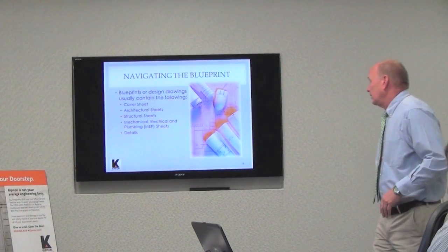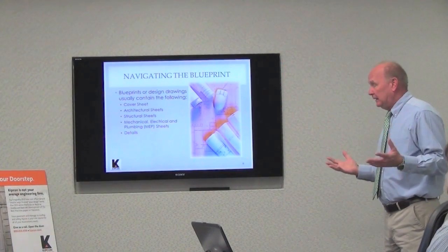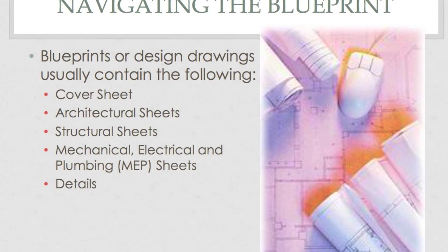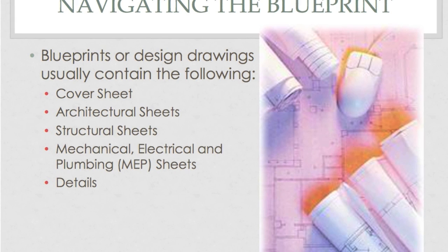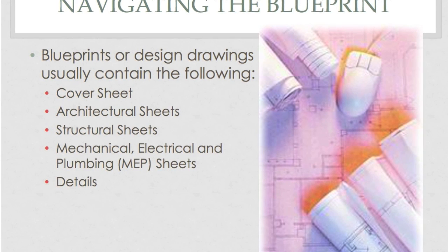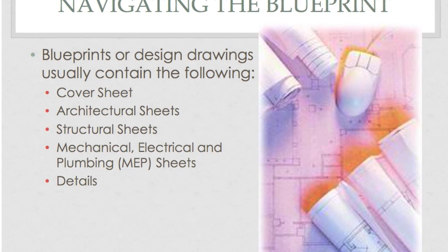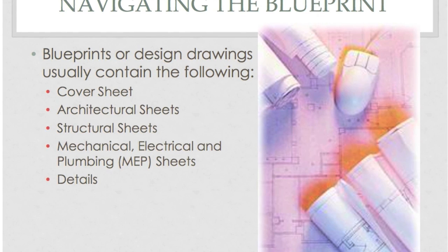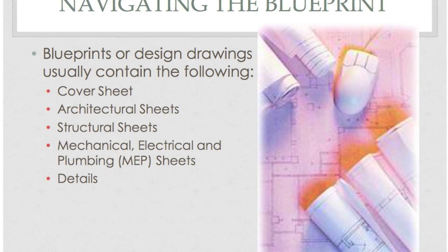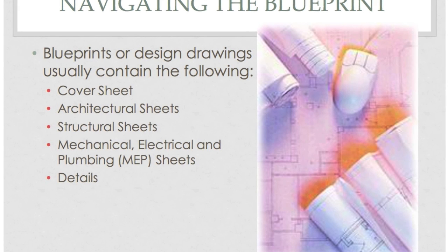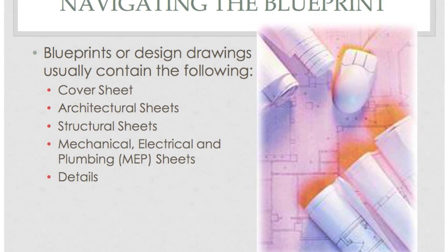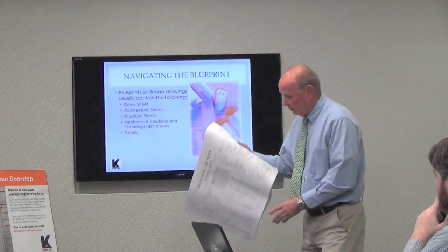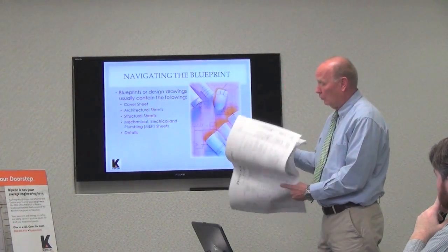Blueprints usually contain a cover sheet, architectural sheets, structural sheets, and mechanicals — sometimes referred to as MEP: mechanical, electrical, and plumbing sheets — plus the details. That typically makes up a set of drawings like this one, which happens to be a clubhouse for Toll.